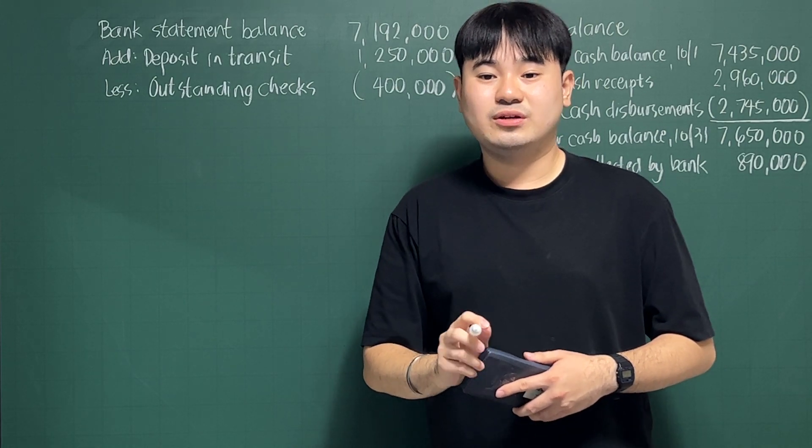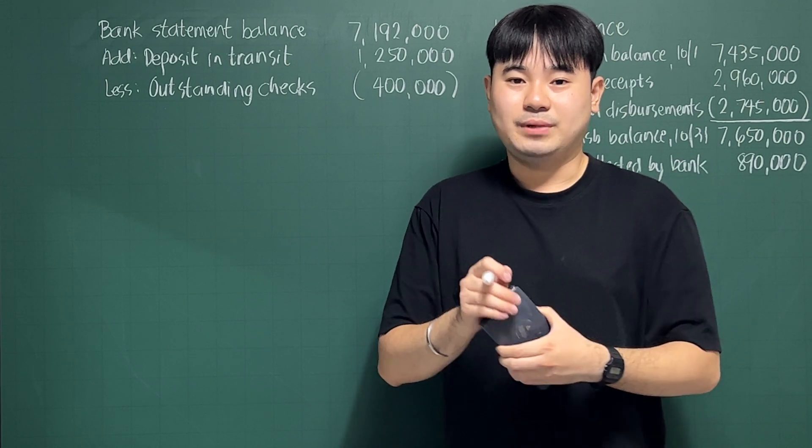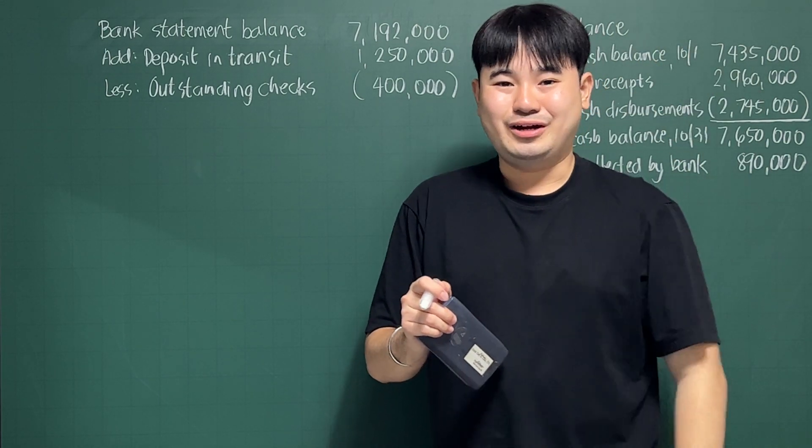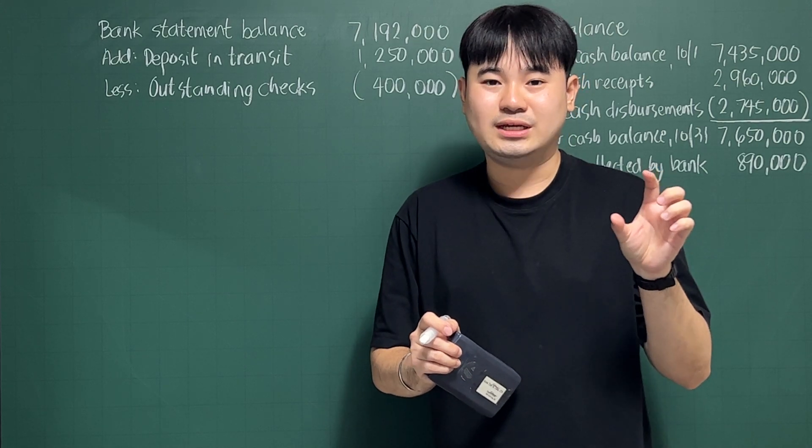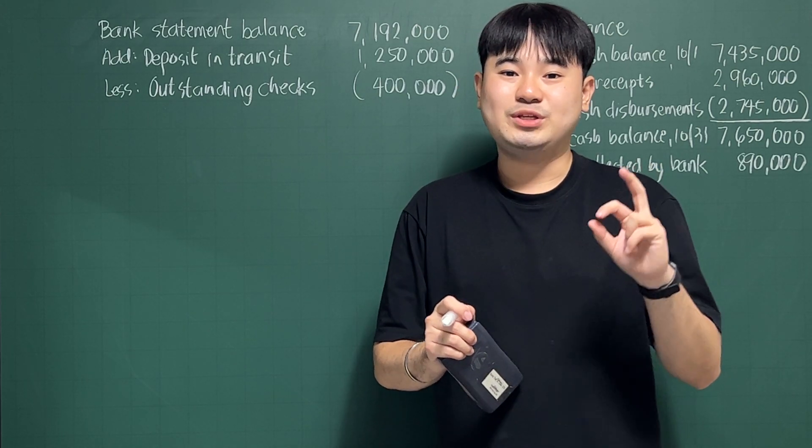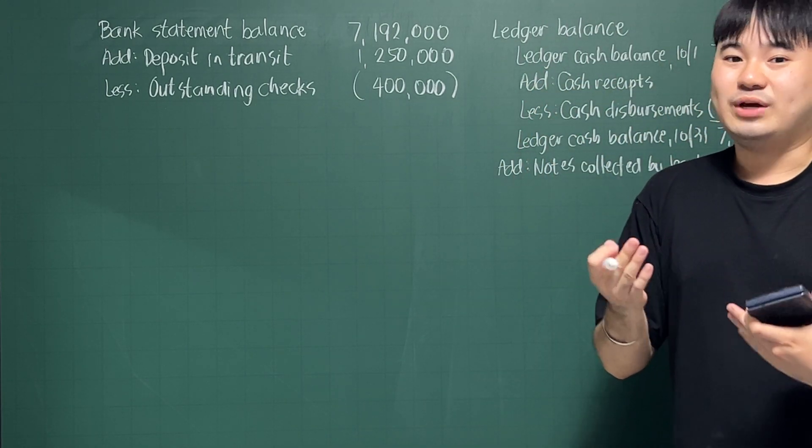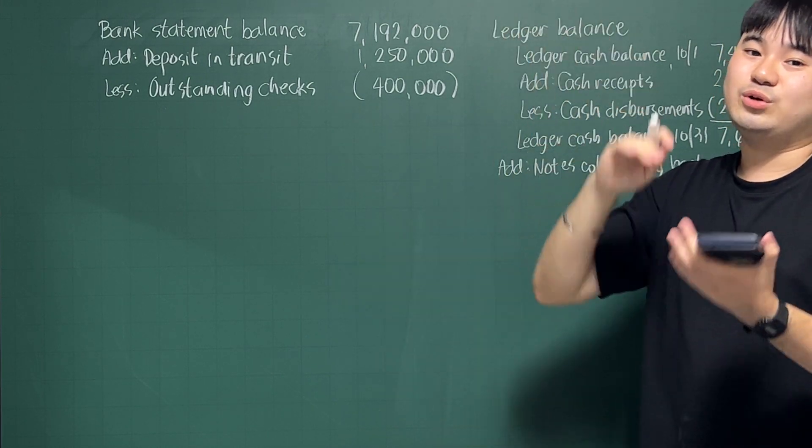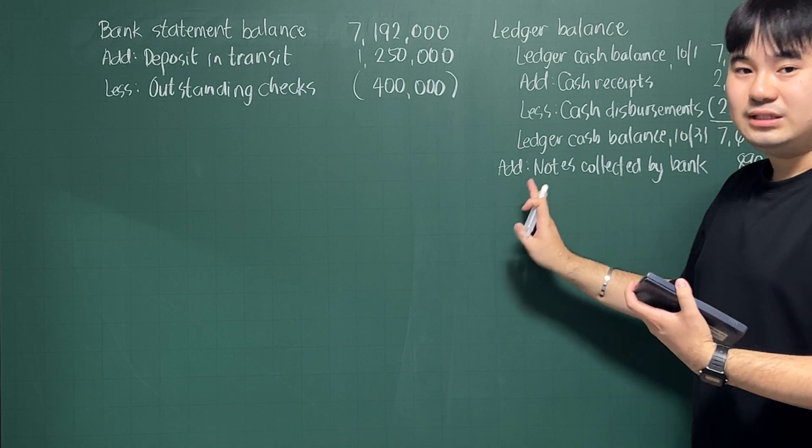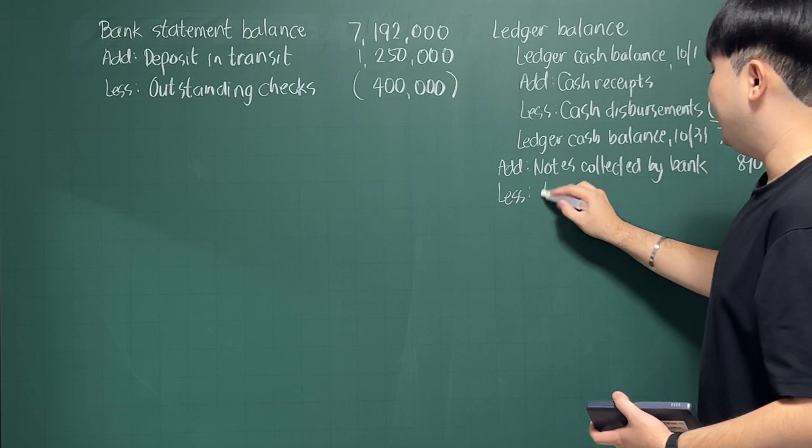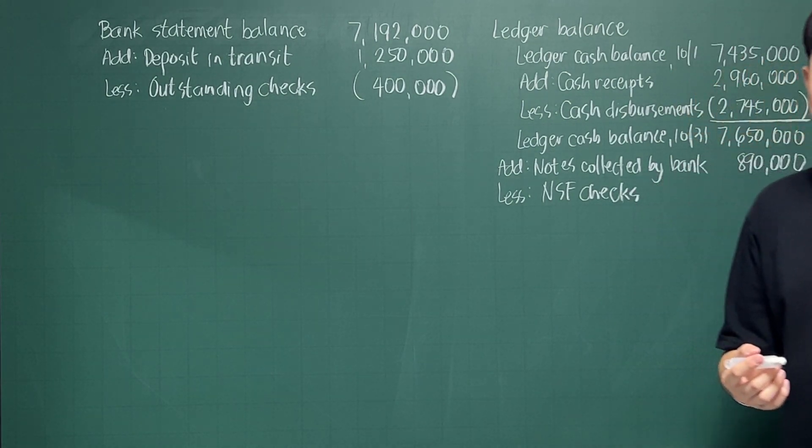The next one is NSF checks or non-sufficient funds checks for $345,000. The company has received the check, but when they try cashing it and getting the actual cash from it, it says that the source fund is actually not sufficient. So that will be transformed as a receivable on the company side. So instead of putting it as cash, you have to put it as receivable. So removing it from cash when you recorded it during the time of the receipt of the check, you have to transform it into a receivable, you have to deduct it here. So you have to deduct it here, less NSF checks for $345,000.